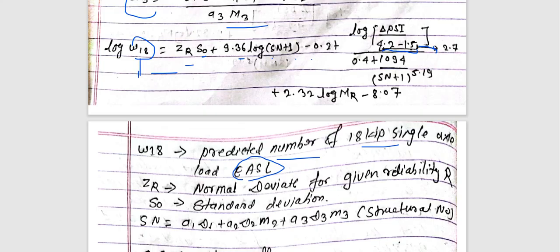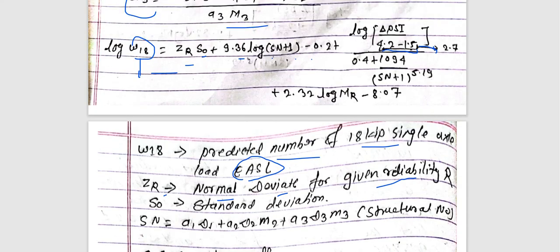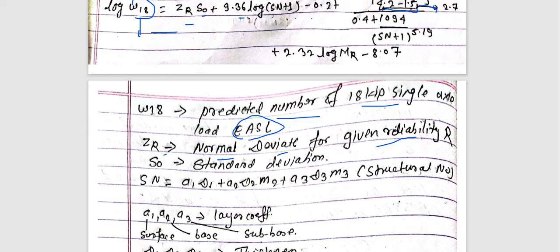ZR is the normal deviate for given reliability. We can get the ZR value from the table. S-naught is the standard deviation. From the formula, SN can be calculated as a1·d1 + a2·d2·m2 + a3·d3·m3.